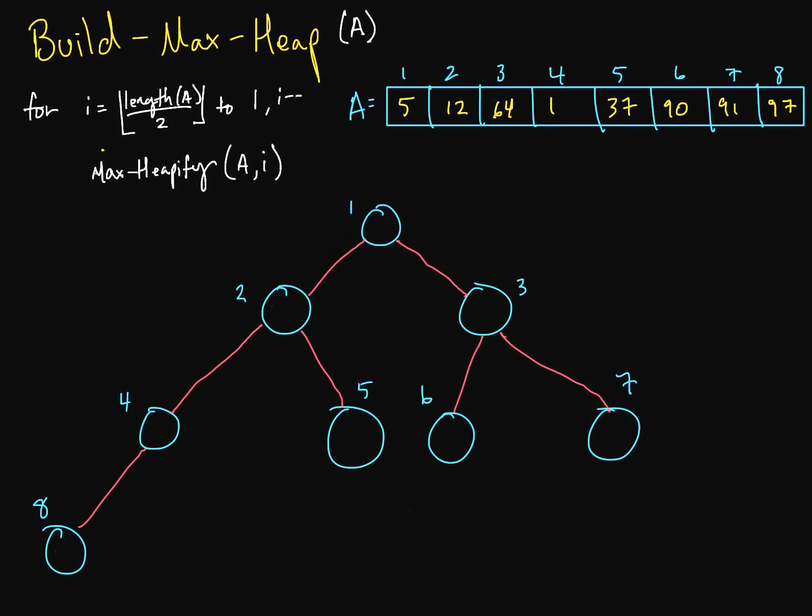And all we have to do is insert these elements. In our visual diagram here, we're just going to write these elements. So we've got five, and then twelve, and then sixty-four. We're just going along left to right: one, thirty-seven, ninety, ninety-one, and ninety-seven. And now here's our little algorithm, so we're ready to actually build heap.